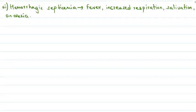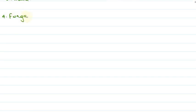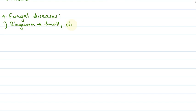Next we would be discussing about the fungal diseases. The most common fungal disease is ringworm. The symptoms are that the cattle develop small, circular, and discolored patches. This disease is caused by fungi.